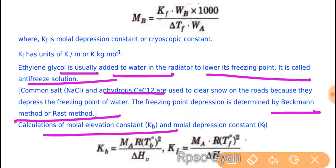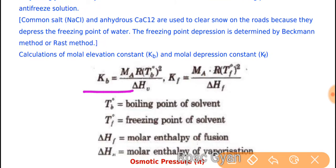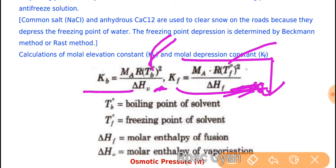The molar elevation constant and molar depression constant: K_b = Mₐ × R × T_b² / ΔH_v, where T_b is the boiling point of solvent and ΔH_v is the enthalpy of vaporization. A similar equation applies for K_f using T_f and the molar enthalpy of fusion.